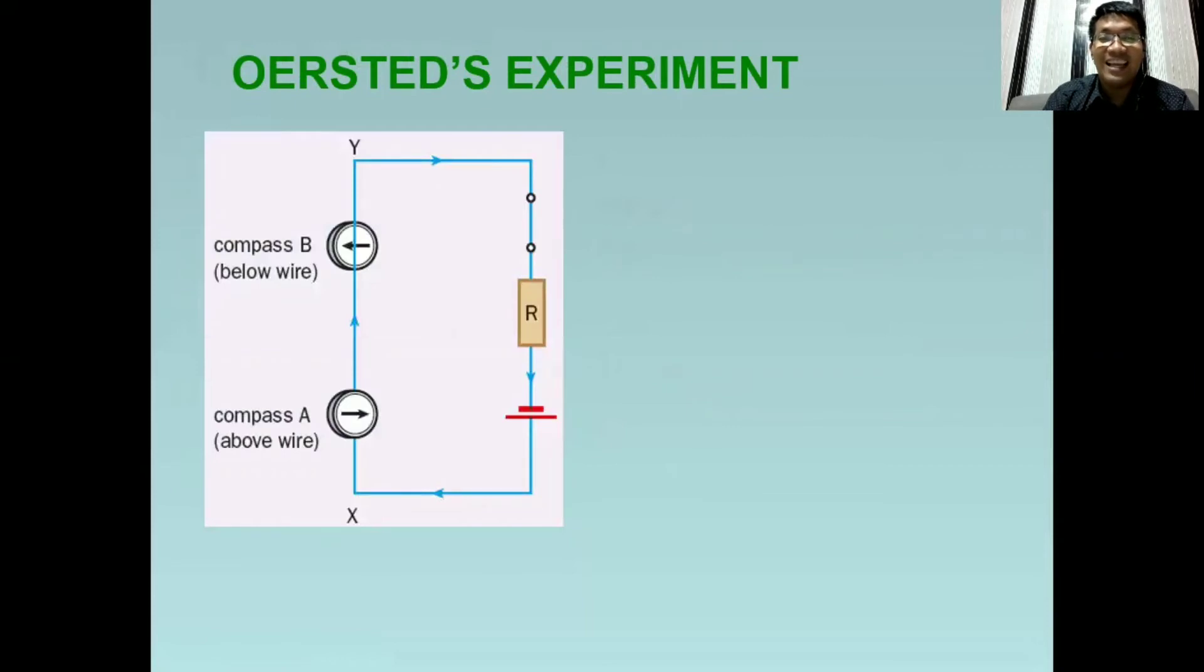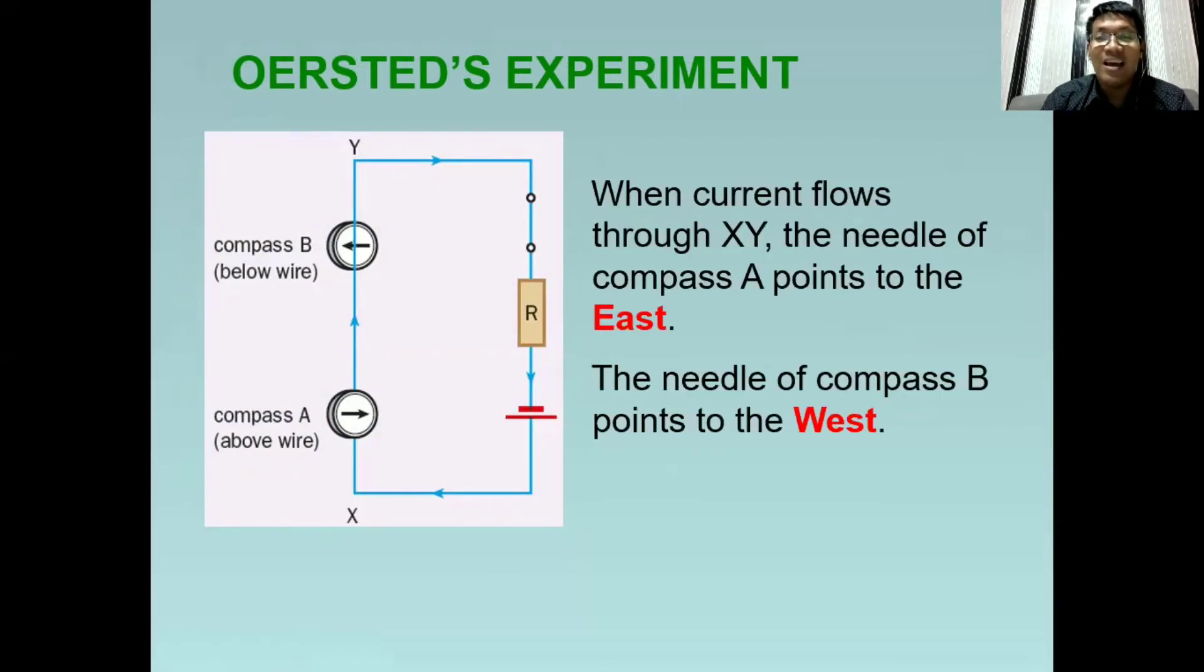This will be the effect. As you can see, once the current flows through the X and Y, the needle of compass A points to the east, while the needle of compass B points to the west.